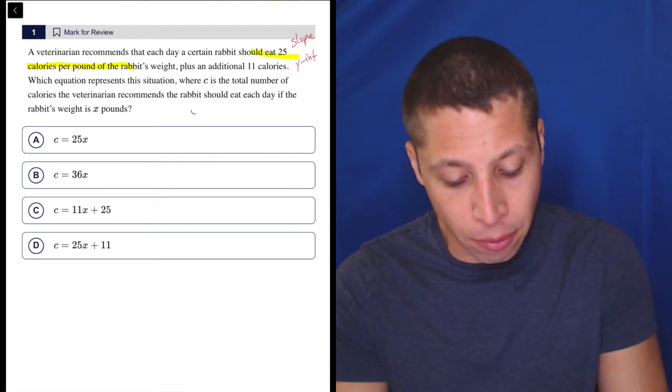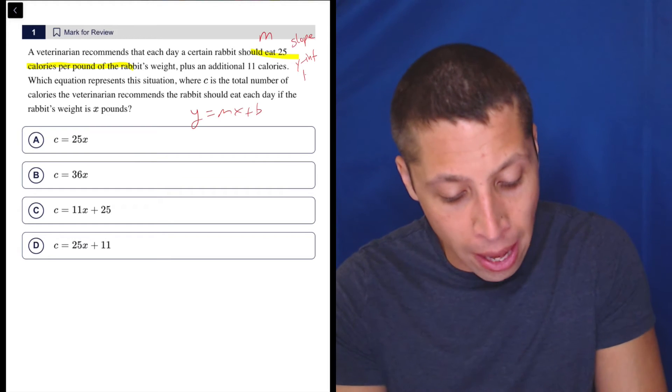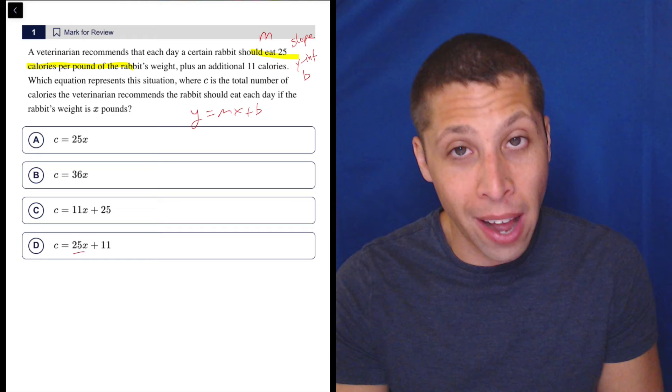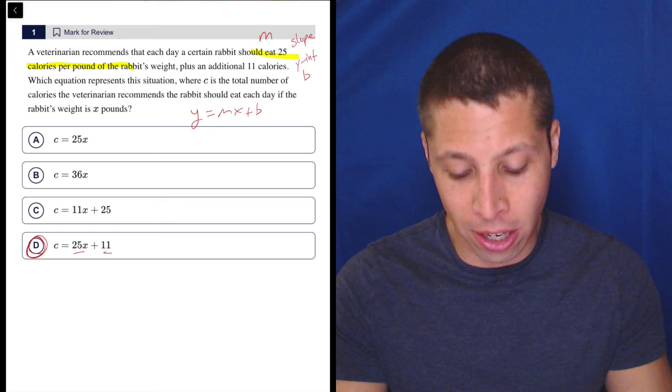So all we need to recognize is that if we're building our y equals mx plus b equation, this is my m, this is my b. So 25 is my m, 11 is my b, and that's it. It follows a very standard kind of linear equation here.